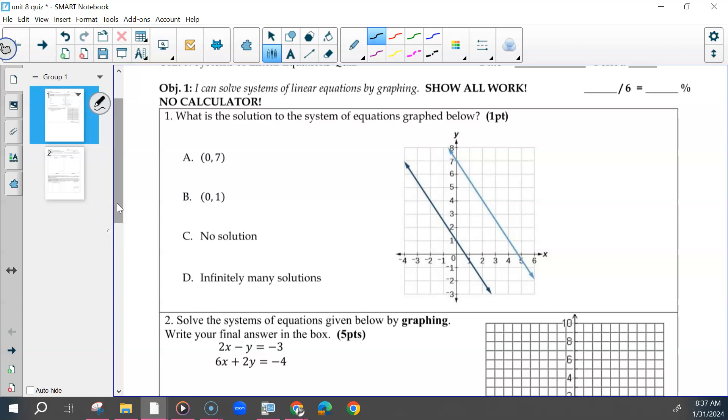For the first one, this should have been no solution. No work needed to be shown. Some of you may have heard infinitely many, which would only work if they were overlapping. So it should have been no solution. Questions on that one? That was basically right or wrong.